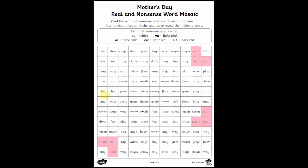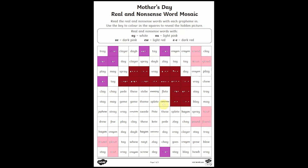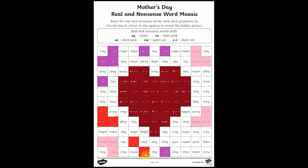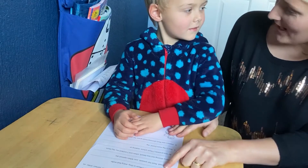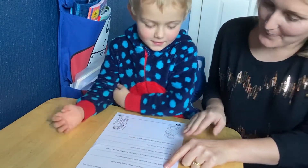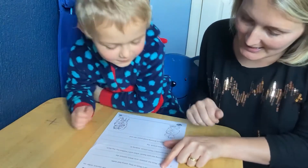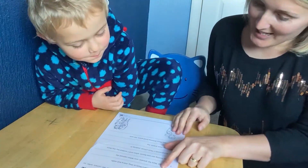Of course we've got lots of individual resources too so take a look at some of these English ones. We've got phonics activities like this mosaic activity or you could help your child with this sentence and scramble sheet.